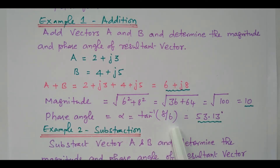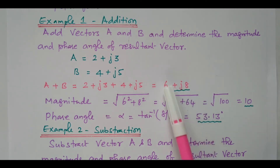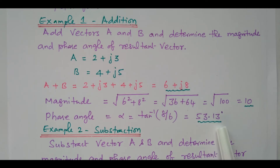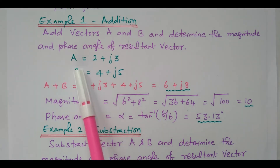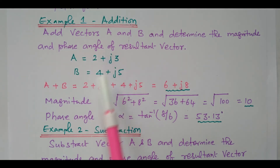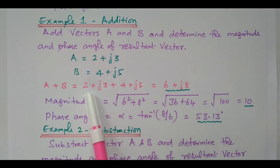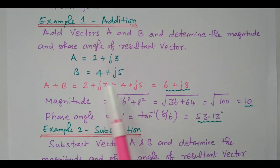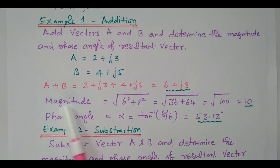That is equal to 10. Then how will you find the phase angle? Tan inverse of imaginary term by real term: 8 by 6, that is 53.13 degrees. So in this problem, two vectors available in rectangular form are added. This rectangular form can be easily added — real terms should be added and imaginary terms should be added. From that, we calculated magnitude and phase angle also.